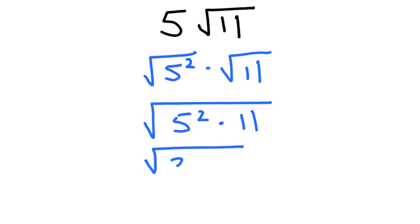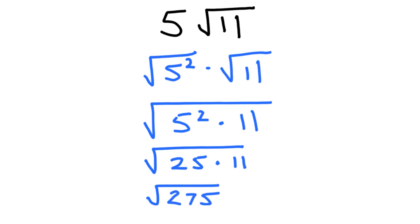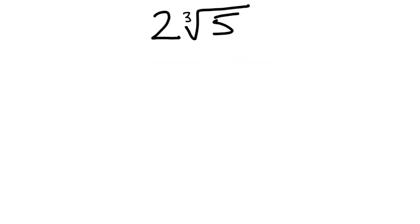5 squared is 25, and then simplifying further, 25 times 11 is 275 — so the square root of 275. This is the better way of doing it: taking that rational number and doing the square root and square at the same time. A square root is really the opposite of a square, so when we're squaring and square rooting the 5 at the same time, they cancel out and we're just left with that 5.